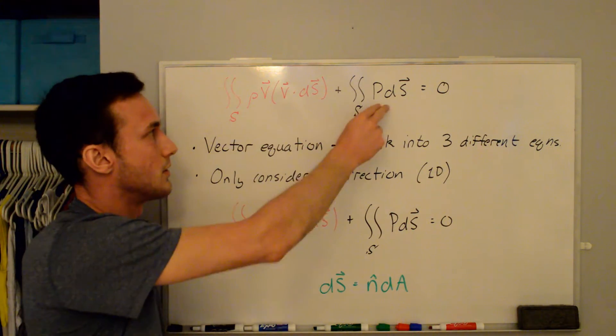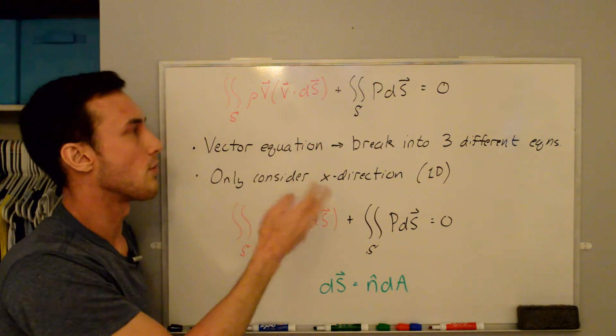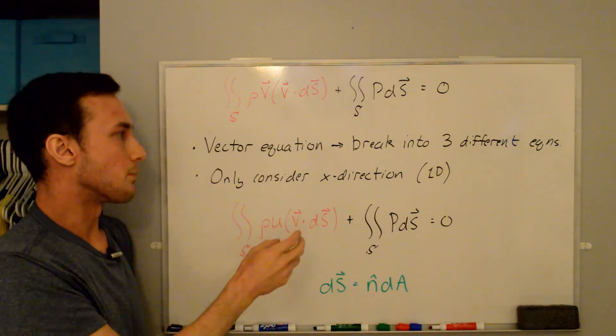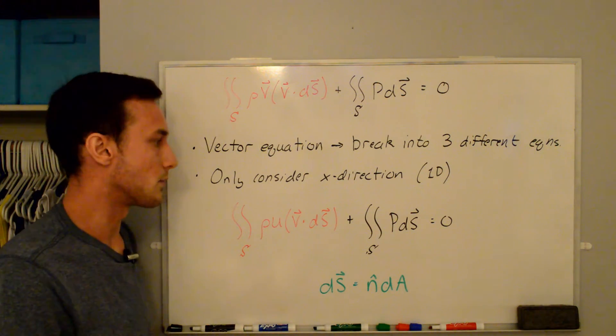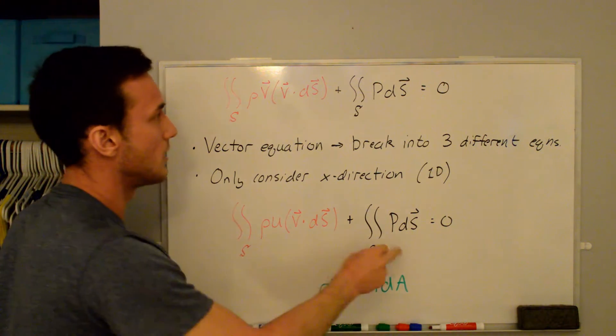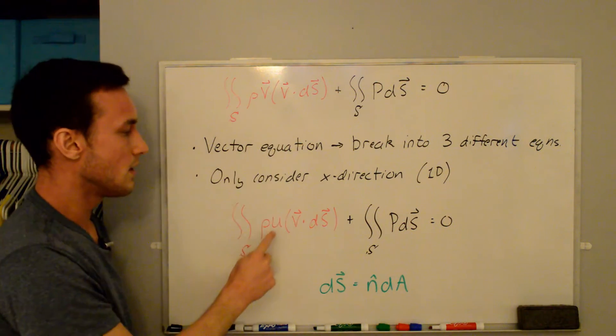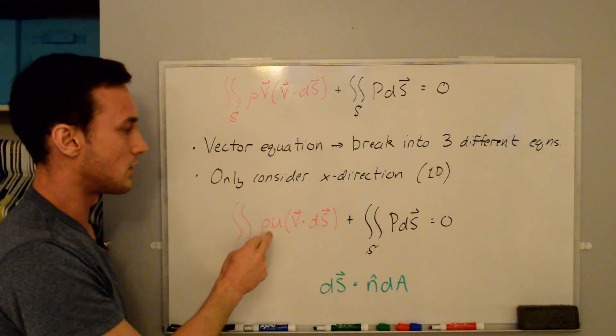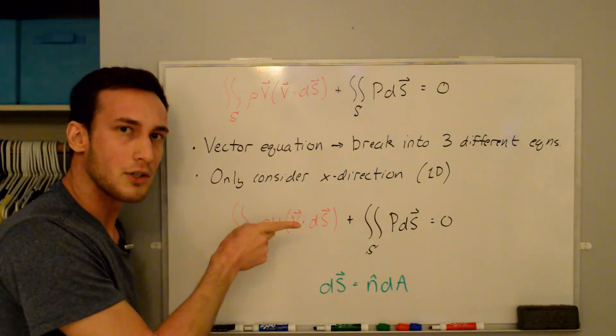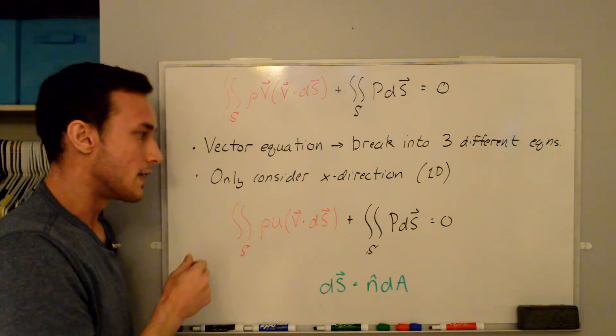Okay, so now I've written the same equation up here and you can notice that this is actually a vector equation so we can break this into three different equations. But we're only going to consider the x direction because we're deriving this for a 1D assumption. So I've rewritten this equation just with one change to consider only the x direction, and that's to change this velocity here to a u.